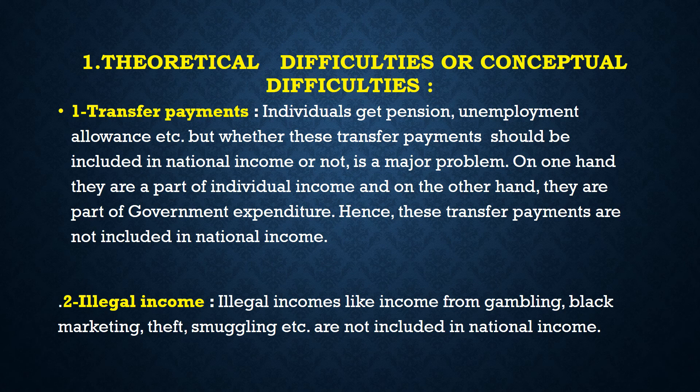Number 2: illegal income. As everyone knows, this income is not accounted anywhere. That is why it is not included in the national income. Illegal income like gambling, black marketing, theft, smuggling, etc. are not included in the national income.